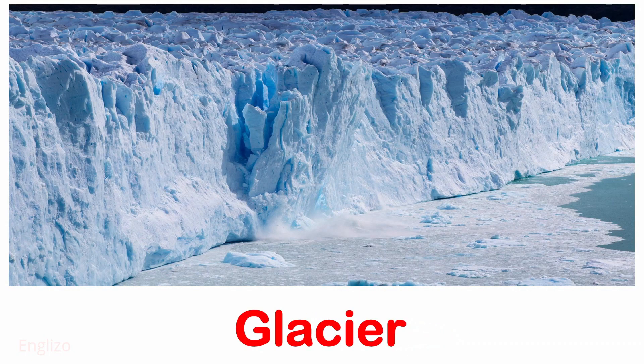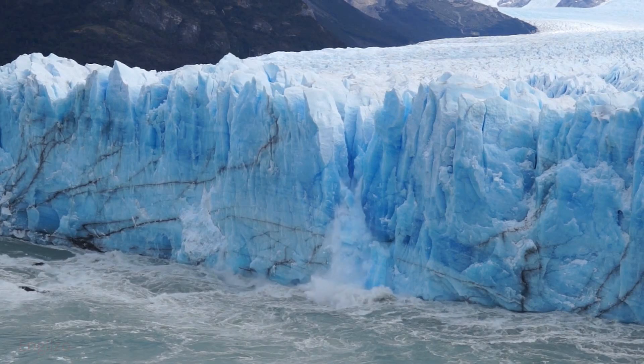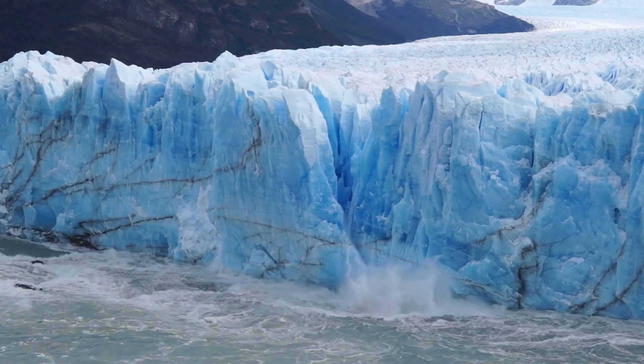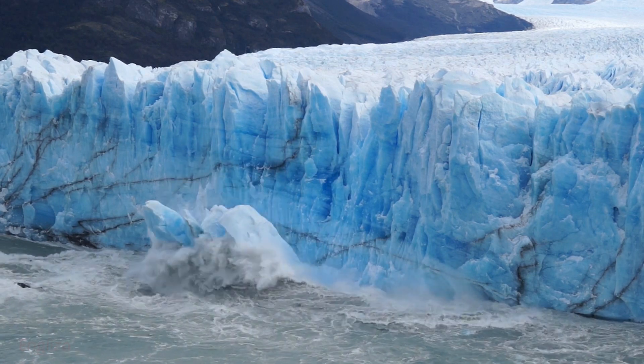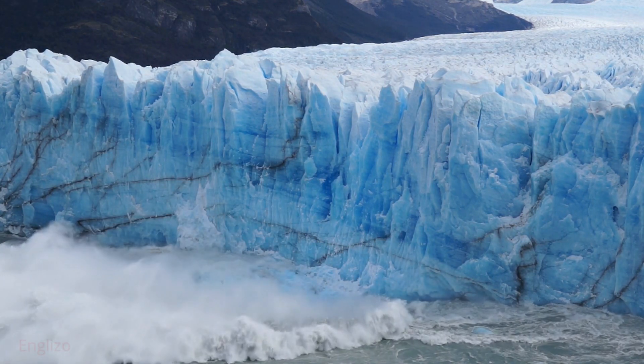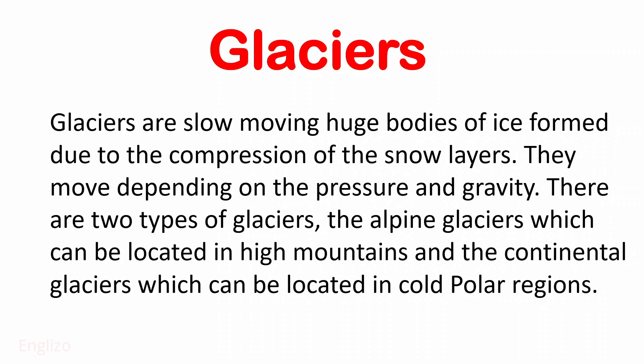Next is Glacier. Glaciers are slow-moving huge bodies of ice formed due to the compression of the snow layers. They move depending on the pressure and gravity. There are two types of glaciers: the alpine glaciers, which can be located in high mountains, and the continental glaciers, which can be located in cold polar regions.